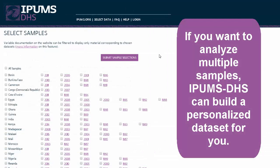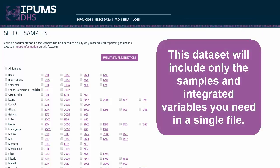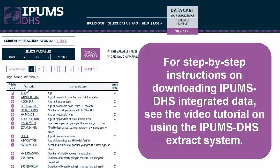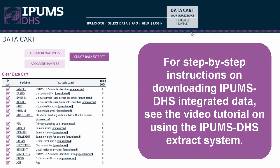If you want to analyze multiple samples, IPHMS DHS can build a personalized dataset for you. This dataset will include only the samples and integrated variables you need in a single file. For step-by-step instructions on downloading IPHMS DHS integrated data, please see the video tutorial on using the IPHMS DHS extract system.